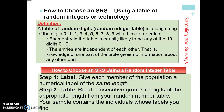Knowing one number before it doesn't impact the number after it. To choose a simple random sample using a random integer table, just think of it as a long string of single digit numbers. First, you always want to label it — give each member of the population a numerical label of the same length. For example, if there are 20 students, label them 01 through 20: 01, 02, 03, 04, and so on up to 20.